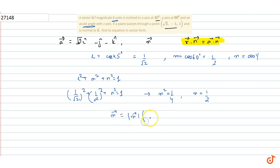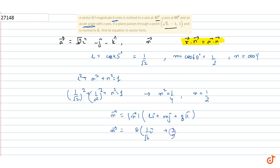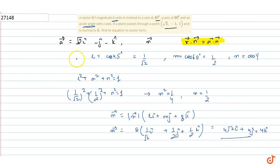The n⃗ vector equals the magnitude times the direction cosine unit vector: 8 × (1/√2 î + 1/2 ĵ + 1/2 k̂). Multiplying through, this gives n⃗ = 4√2 î + 4ĵ + 4k̂.